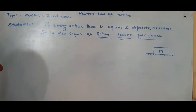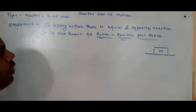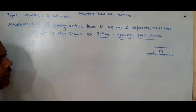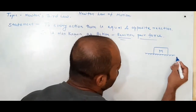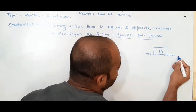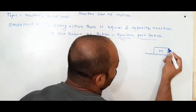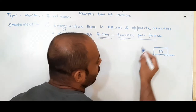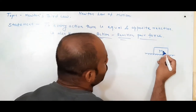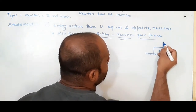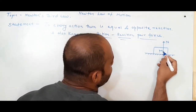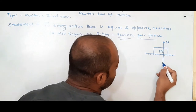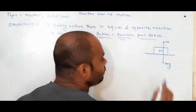Let's try to understand what Newton said in his Third Law. Suppose there is a surface, and a block of mass m kg is placed on it. On the block, a normal reaction N acts upward, and its weight mg acts downward.